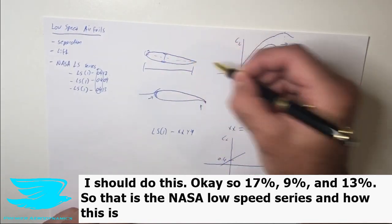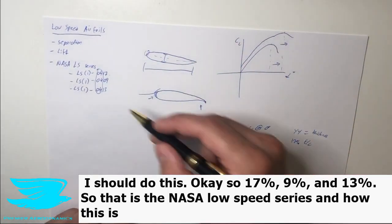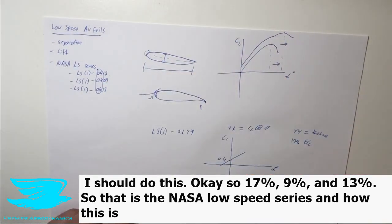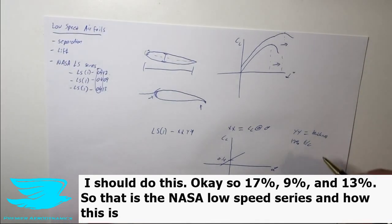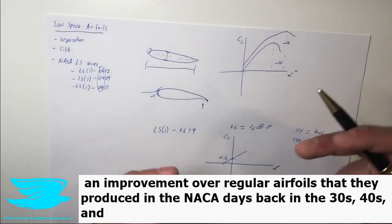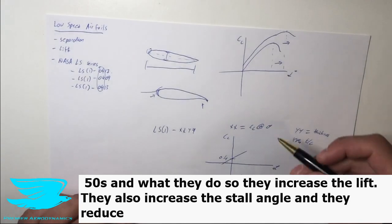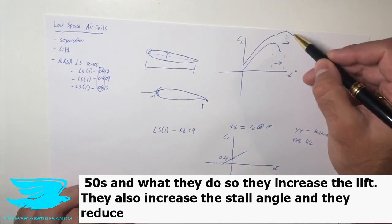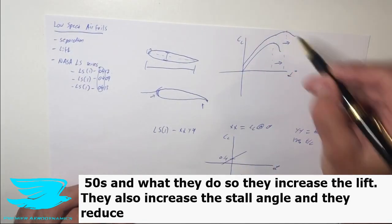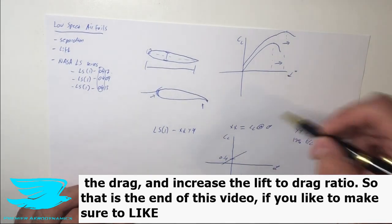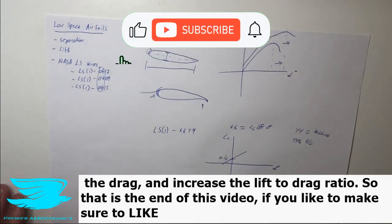So we can know that thickness: 17 percent, 9 and 13 percent. So that is the NASA low speed series and how this is an improvement over regular airfoils that they produced in the NACA days back in the 30s, 40s and 50s, and what they do. So they increase the lift, they also increase the stall angle, and they reduce the drag and increase the lift to drag ratio.